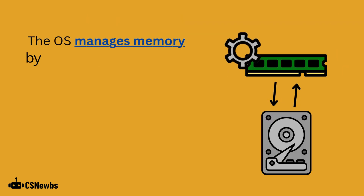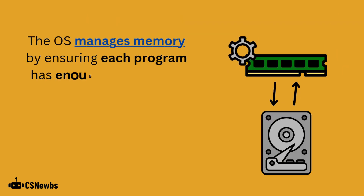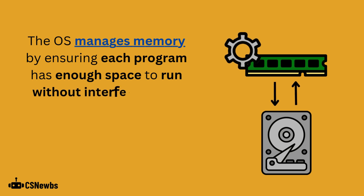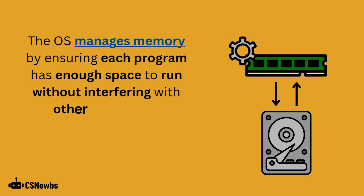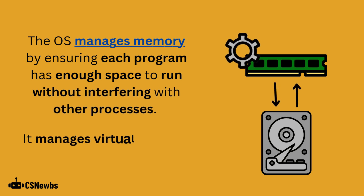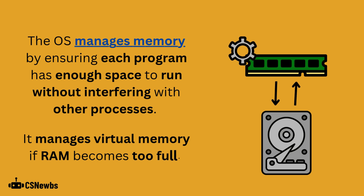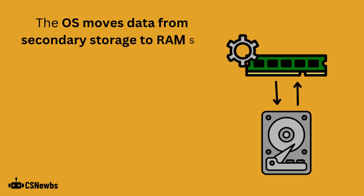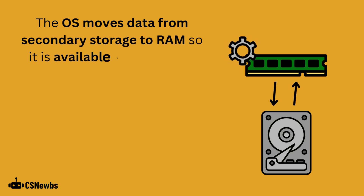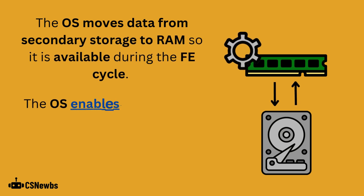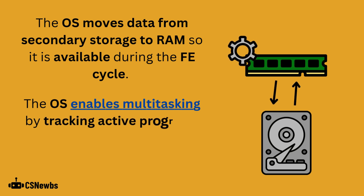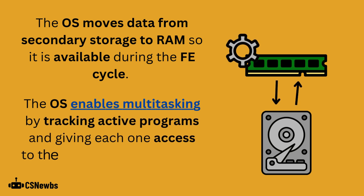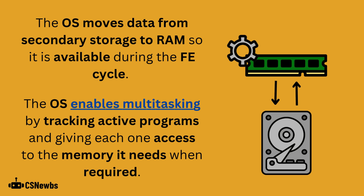The operating system manages memory by ensuring each program has enough space to run without interfering with other processes. It manages virtual memory if RAM becomes too full. Look back at 1.2.1 for more information about virtual memory. The operating system moves data from secondary storage to RAM, so it's available during the fetch-execute cycle. The operating system also enables multitasking by tracking active programs and giving each one access to the memory it needs when required.